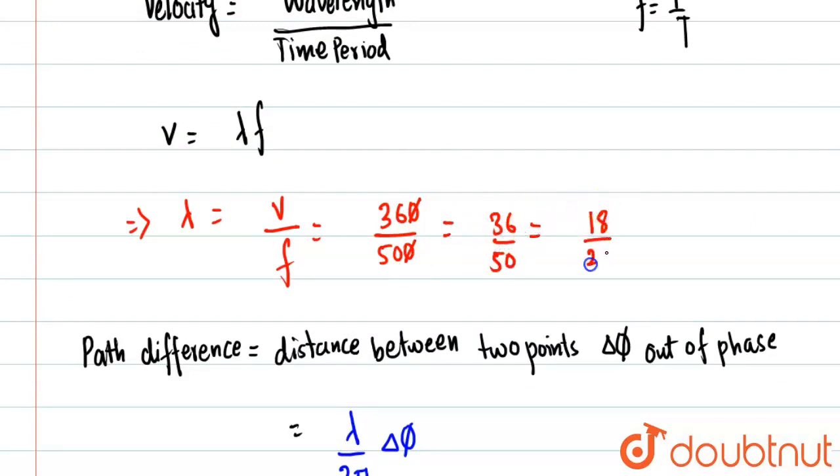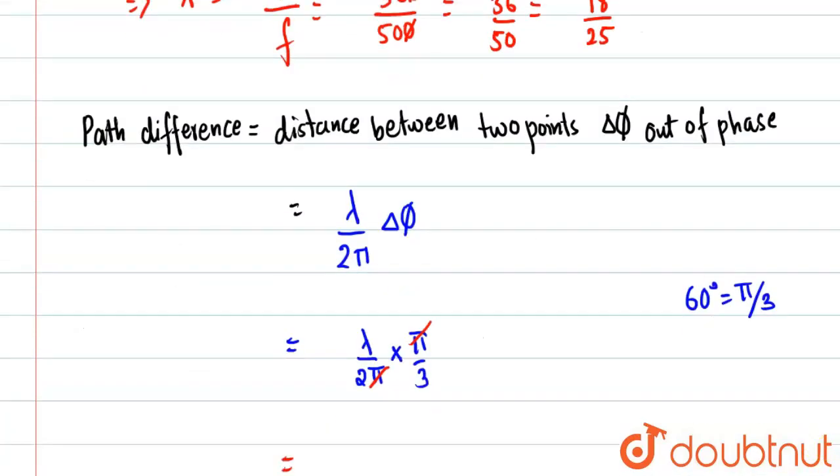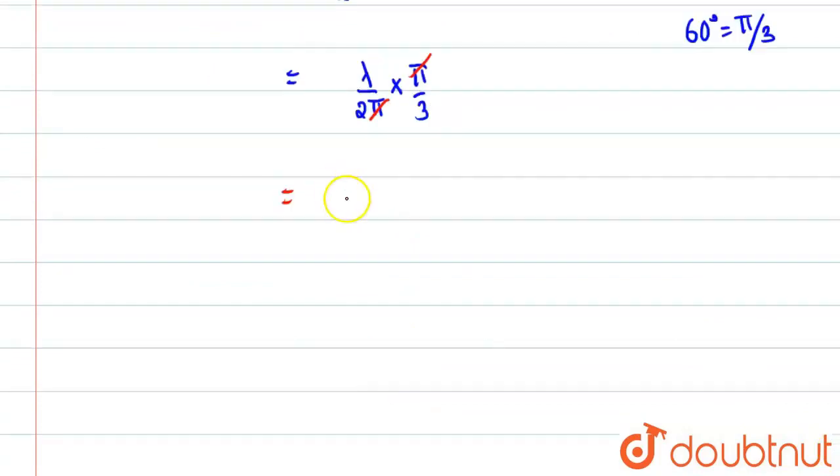And we'll cancel it from 2, we will get 18/25. No more it's getting cancelled, so we'll leave it like this, 18/25. So we'll put the value of wavelength which is 18/25 and we will also put this 3 over here.